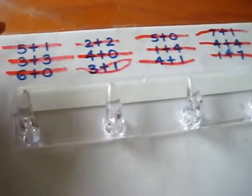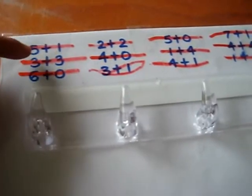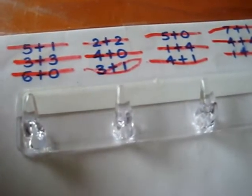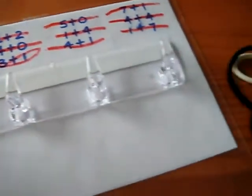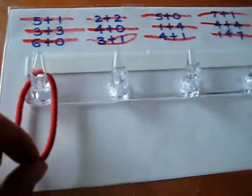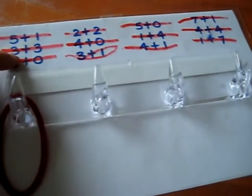And so every time he got it right, he would build it with his little rods. Five plus one, and he would tell me the answer. If he got it right, he got to put a little rubber band on top of the hook.